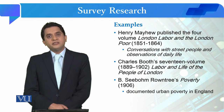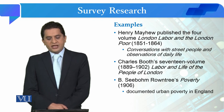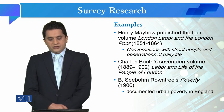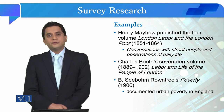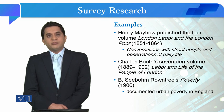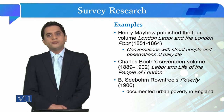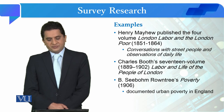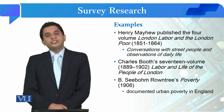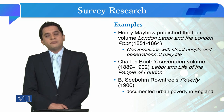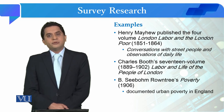The second example is Charles Booth's 17-volume book on the labour and life of the peoples of London, published between 1889 to 1902. The third and last example is B.S. Rowntree's book on poverty, published in 1906, which documented urban poverty in England.